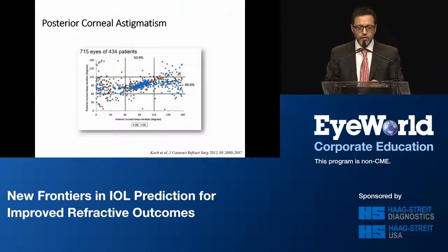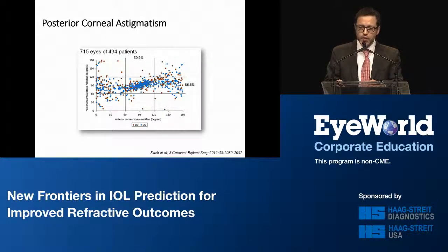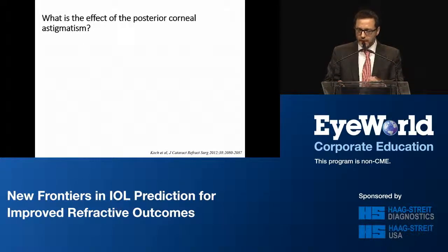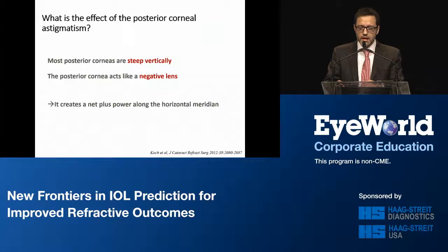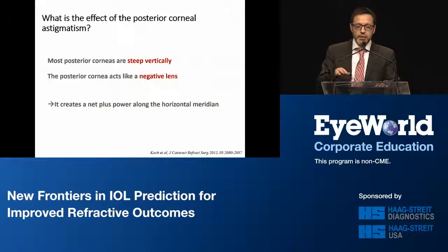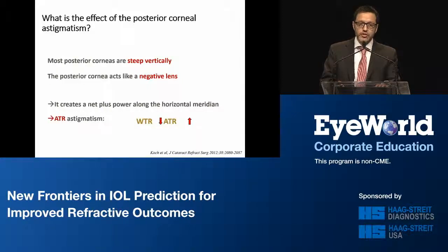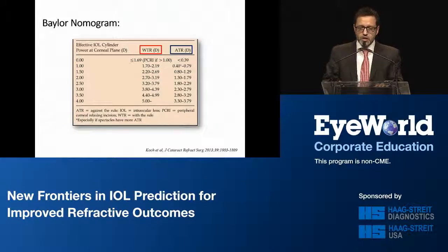Koch and his group looked at the posterior corneas of more than 700 eyes using a Scheimpflug device and found that most corneas were steep along their vertical meridian. Since the posterior cornea acts like a negative lens, being steep vertically means it creates a net plus power along the horizontal meridian, actually inducing against-the-rule astigmatism. Based on their data, they published the Baylor nomogram, which was the first step solution to address this problem.